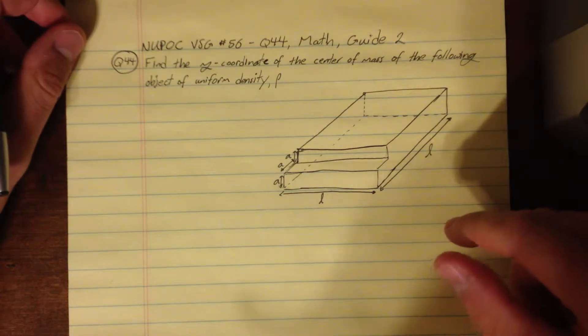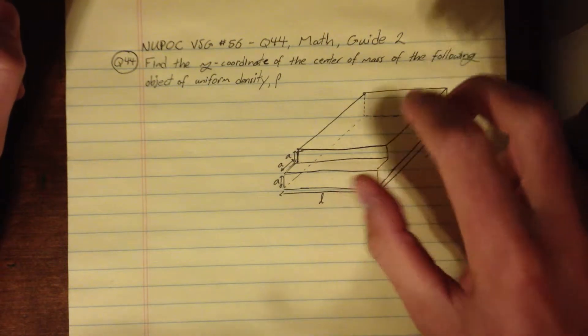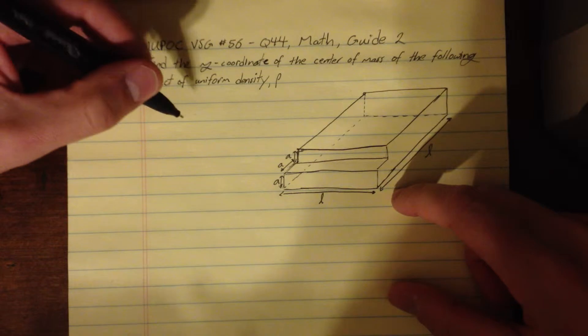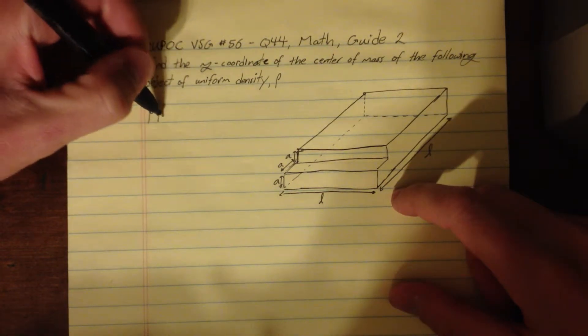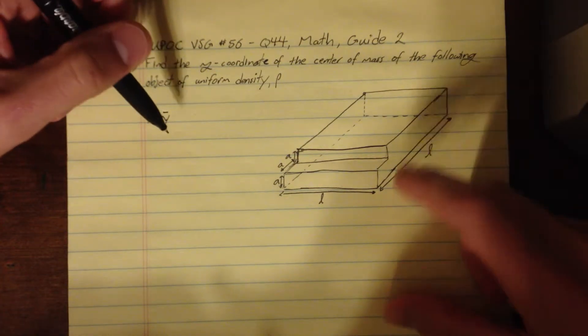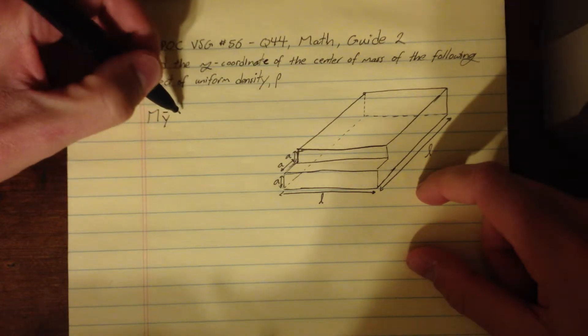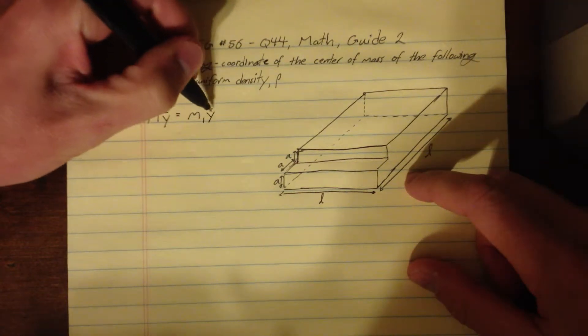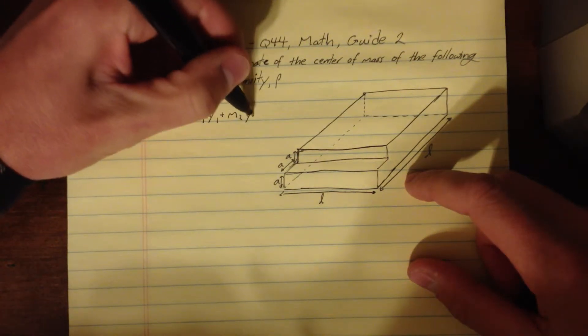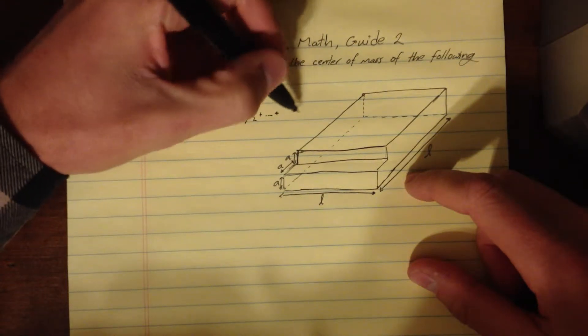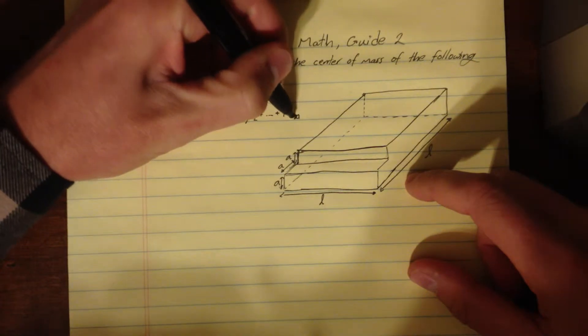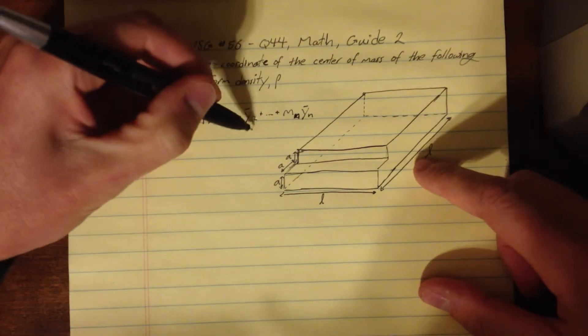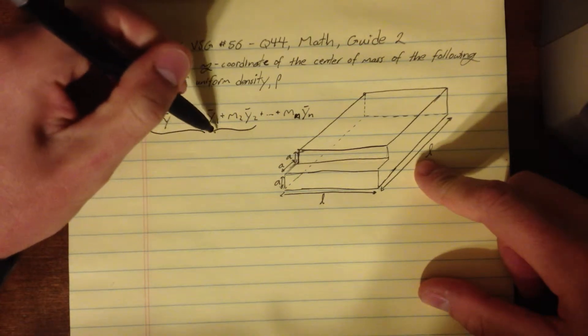But anyways, so we're going to do this the way the solution does it, and that's the method of component parts, where we just kind of split this shape into some easy to compute or easy to deal with shapes, and then we basically just say that the total mass of the object times y bar or the center of mass in the y direction is equal to m1, the mass of the first section times y bar 1 plus m2 y bar 2 plus however many mn y bar n, however many sections you break it up into. So here we're just going to break it up into two sections, so we'll just have this little formula here.